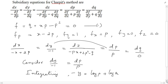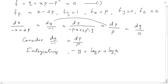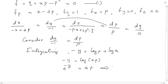Taking dy by minus 1 equal to dp by p and integrating, we get minus y equal to log p plus log a, which simplifies to minus y equal to log(ap). Taking the exponential of both sides, e to the power minus y equal to ap, giving p equal to (1/a) e to the power minus y.